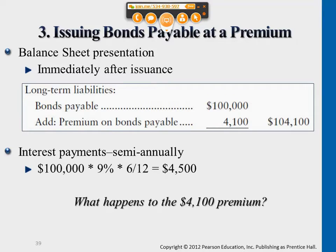Don't forget that interest for bonds is paid every half a year. The formula for the cash interest part is exactly the same for all three cases — we're always calculating cash interest based on $100,000 face value times the interest rate times half a year. So this cash interest payment of $4,500 is the same for issuing at par, issuing at discount, and issuing at a premium.